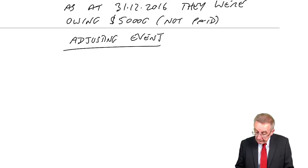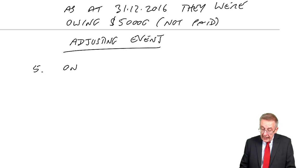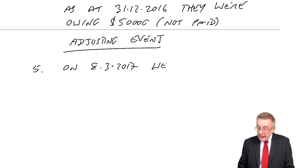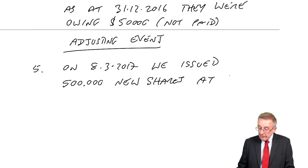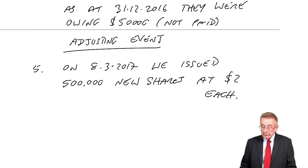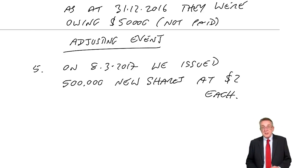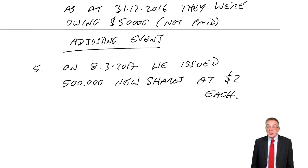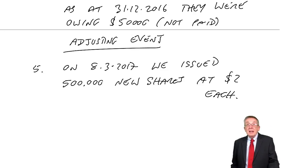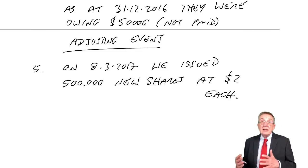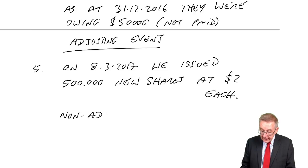What about this one? On 8th March 2017, we issued 500,000 new shares at $2 each. Would we adjust? No, we wouldn't. As of 31st December, we'd have been showing what shares were then in issue — this happened later. But because the amount involved is clearly material, although you won't adjust the accounts, you will disclose by note. Non-adjusting. Disclose by note.